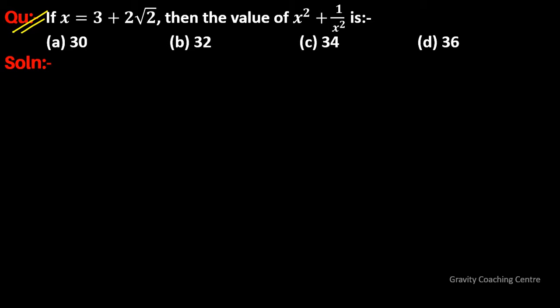If x is equal to 3 plus 2 root 2, then find the value of x square plus 1 upon x square. Given that x is equal to 3 plus 2 root 2, we need to find its reciprocal 1 upon x.